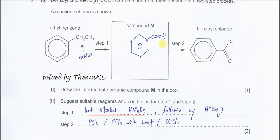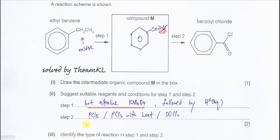Benzoic acid is used to prepare benzoyl chloride. The difference between benzoyl chloride and benzoic acid is the OH versus Cl, so we need to substitute the OH with chlorine. We cannot use chloride directly because chloride is a weak nucleophile and won't substitute the OH. Instead, we use PCl5, PCl3 with heat, or SOCl2 — any one of these will substitute the OH with Cl to form benzoyl chloride.